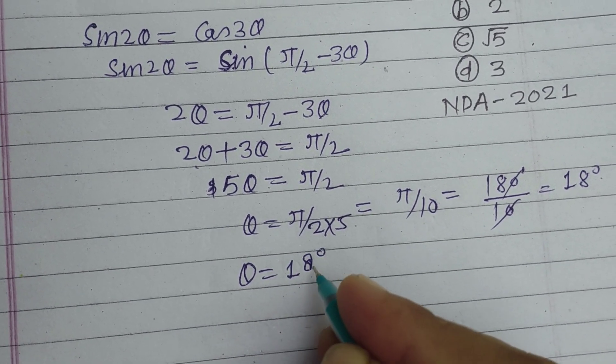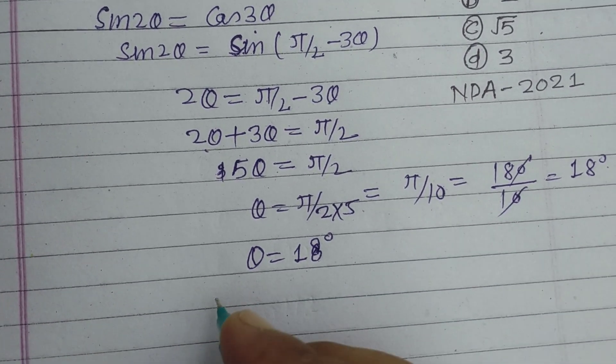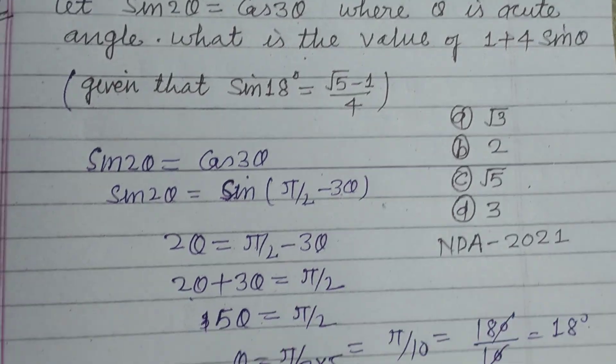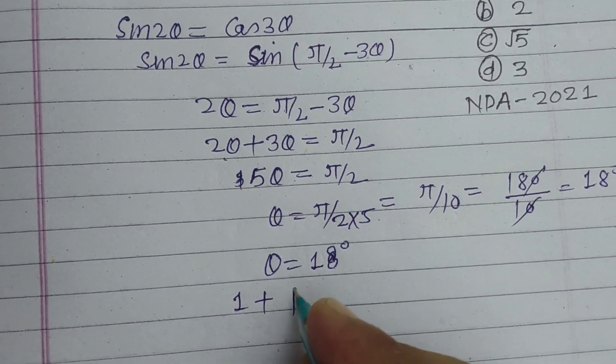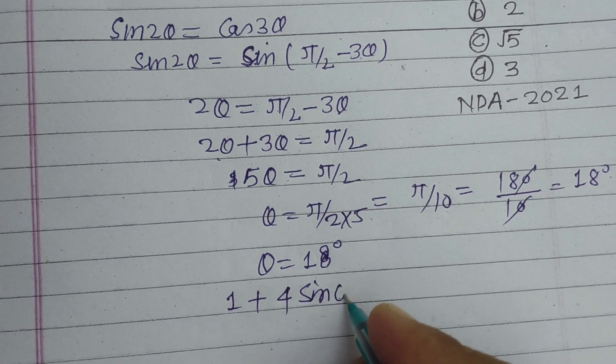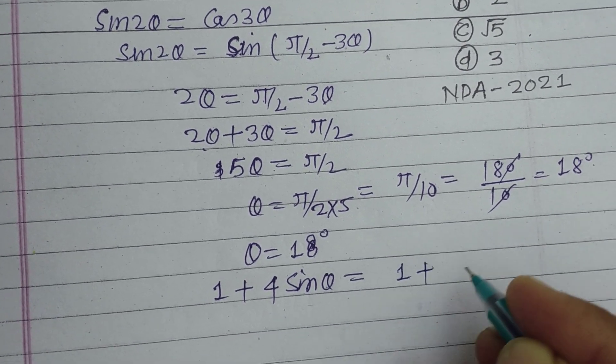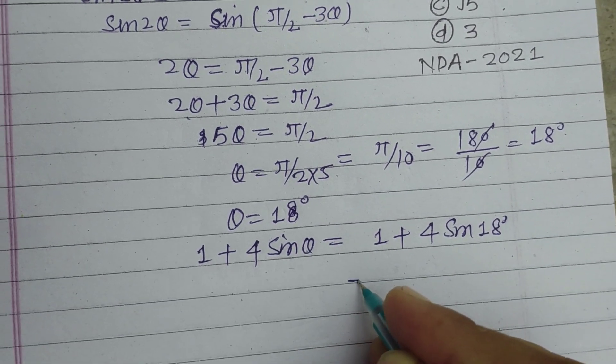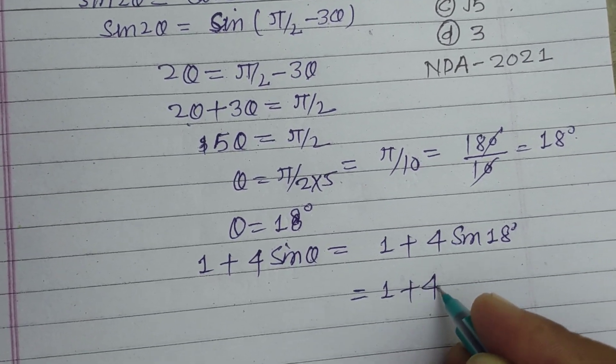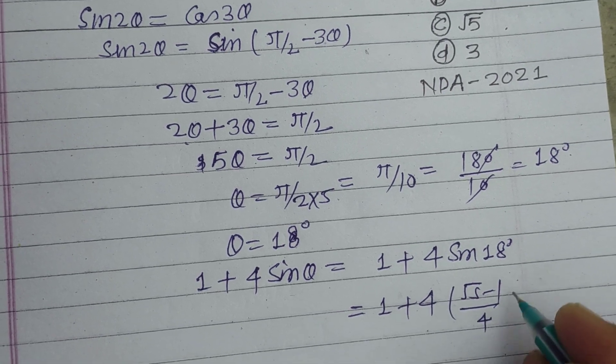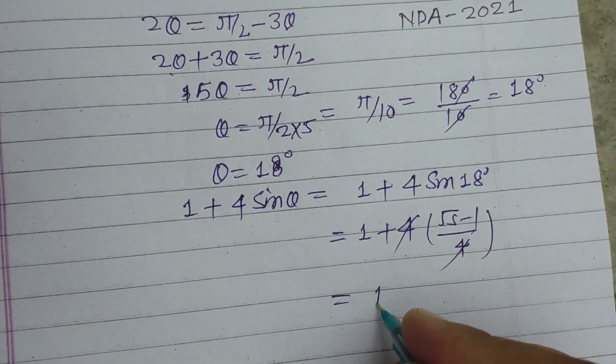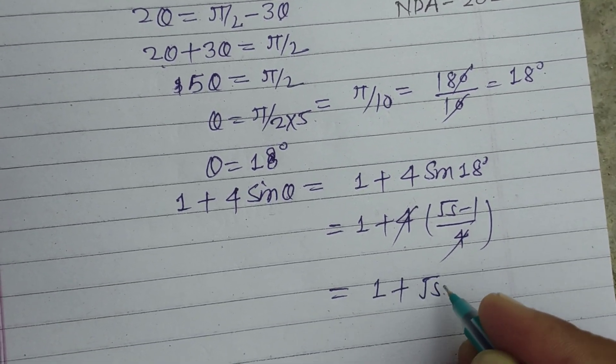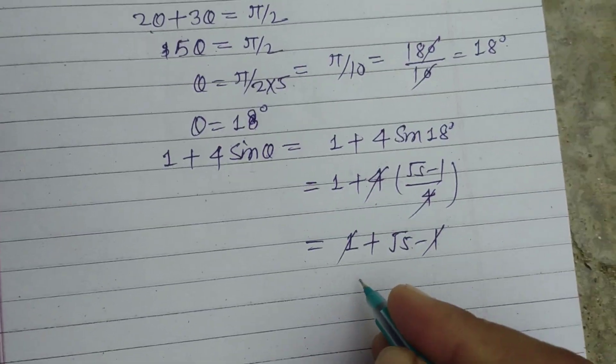Here the question is asking the value of 1 plus 4 sin θ. So 1 plus 4 sin 18, and value of sin 18 is given in the question, which is root 5 minus 1 upon 4. So 4 and 4 cancel, we got 1 plus root 5 minus 1.